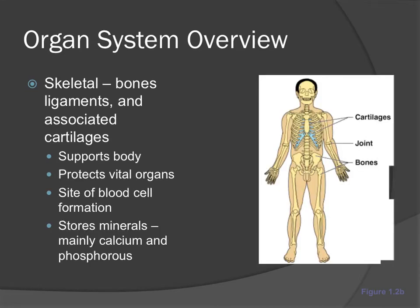The skeletal system is made up of our bones, ligaments, and associated cartilages — that is its anatomy. The physiology is that it supports the body, protects vital organs, is the site of blood cell formation, and stores minerals. It supports the body through things like the rib cage supporting the core, and the limbs bearing the weight of the body.